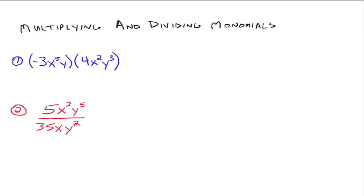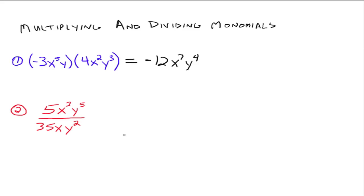Now let's go into multiplying and dividing monomials — the good news is you're already familiar with how to do this. We use the rules of exponents learned before. Negative 3x to the fifth y times 4x squared y cubed: negative 3 times negative 4 is negative 12, x to the fifth times x squared is x to the seventh, and y times y cubed is y to the fourth. That's all multiplying two monomials is about.